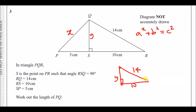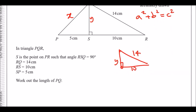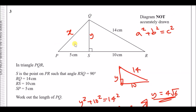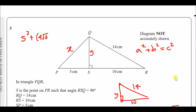The formula is a² + b² = c², where a and b are the two shorter lengths and c is the hypotenuse opposite the right angle. For the first triangle: y² + 10² = 14², so y² = 14² − 10², giving y = 4√6. Now for the second triangle: 5² + (4√6)² = x². Use your calculator's answer button so you keep the exact value of 4√6, and square-rooting the result gives x = 11.